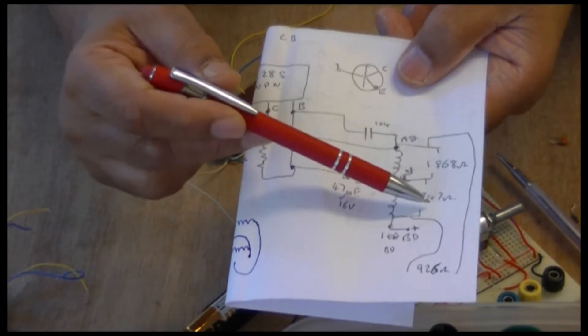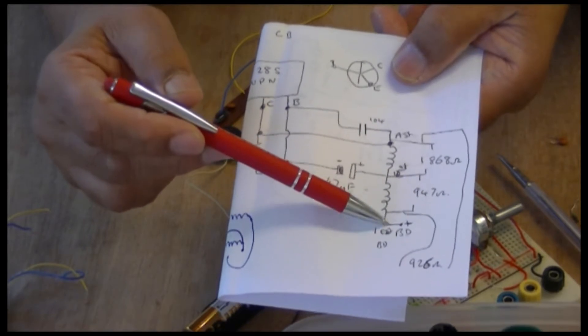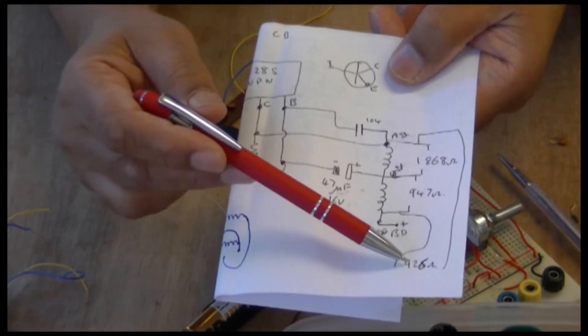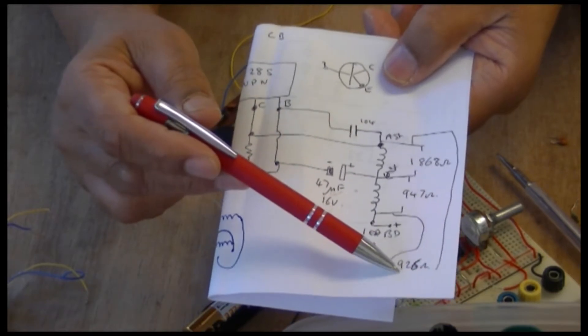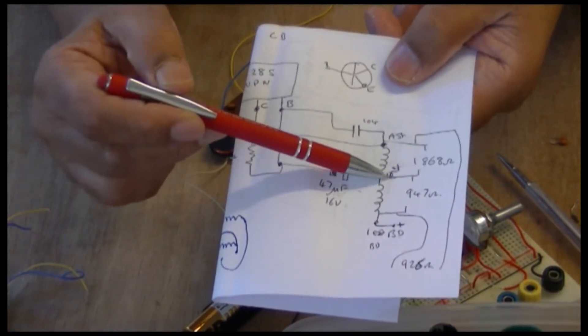And between there and there is 926 or something like that. So it's like half basically. There and there is half, then there is half. But between this coil and this coil it's double resistance. So it's the way they connected it.